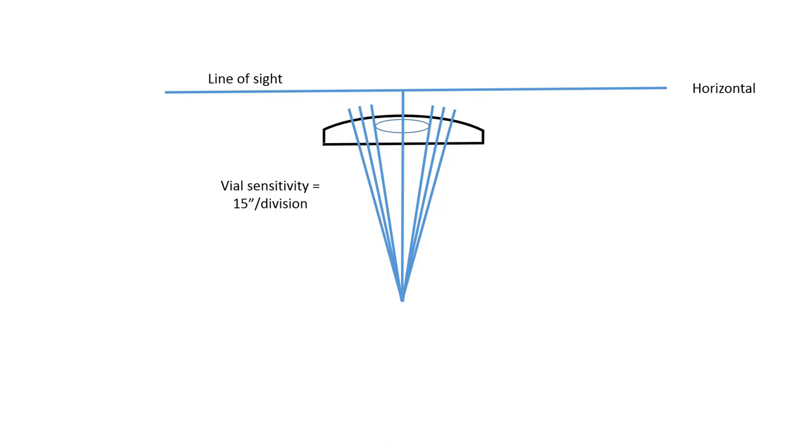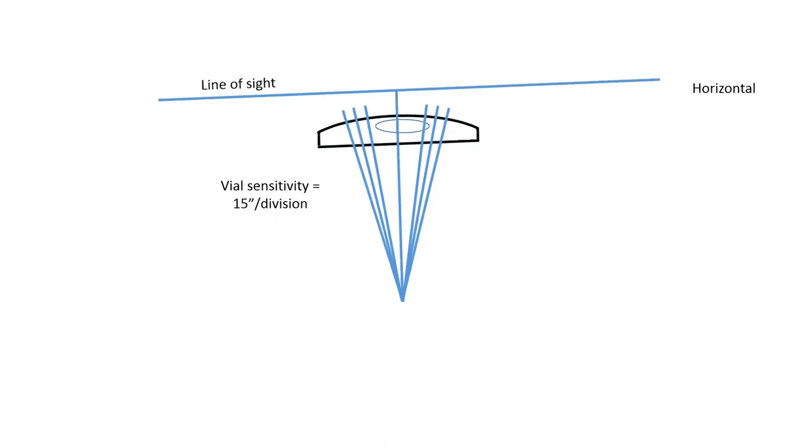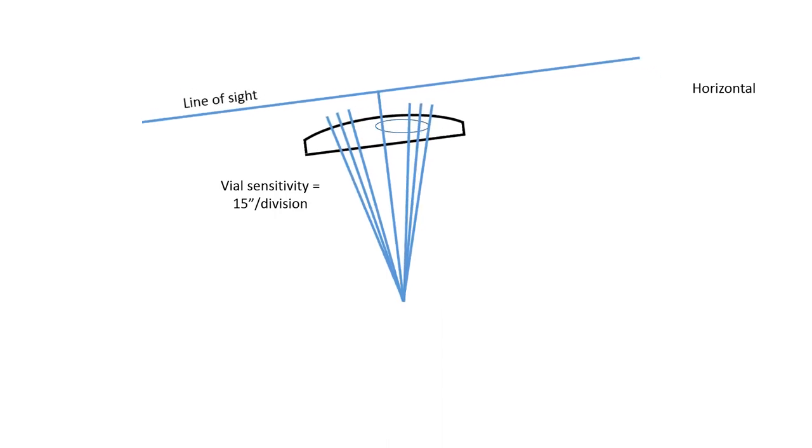Let's say that my instrument is two marks or two divisions out of level. That would mean then that I've got a 30 second error.